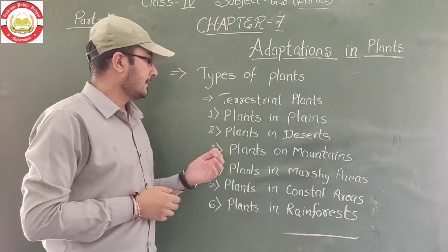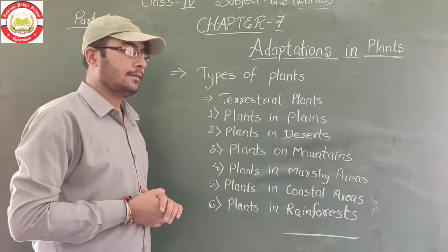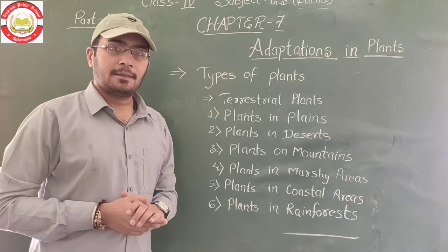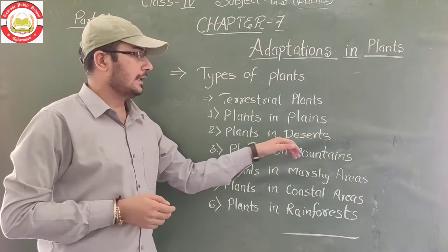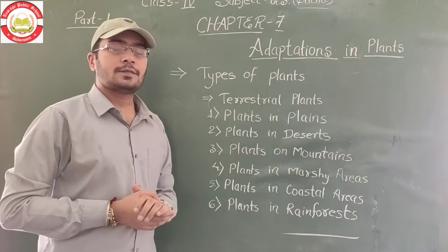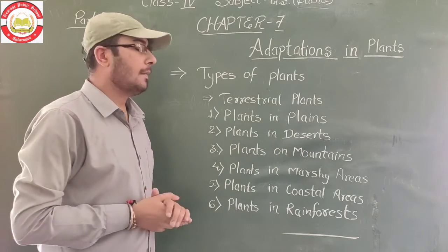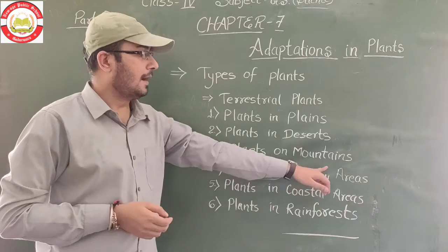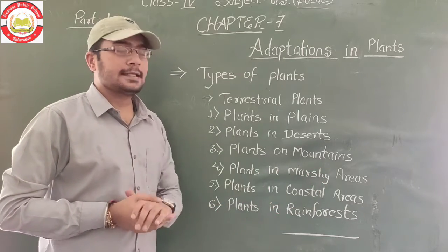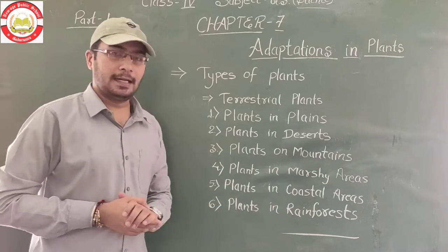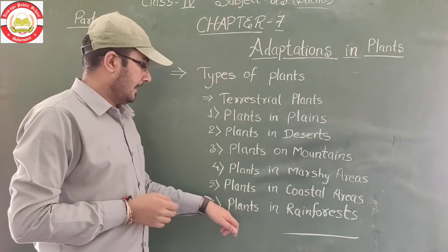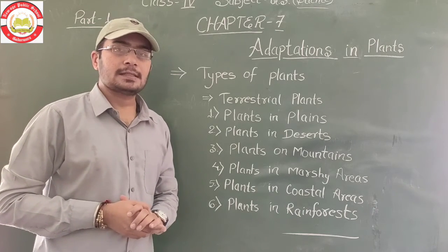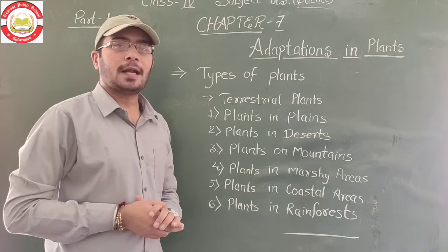The first type is plants in plains. Second is plants in desert — plants that grow in desert areas. Third is plants in mountains — the types of plants grown on mountains. Fourth is plants in marshy areas — plants grown in marshy regions. Fifth is plants in coastal areas — plants grown in coastal regions. And the last one is plants in the rainforest — some places have very heavy rainfall, so particular types of plants grow there.